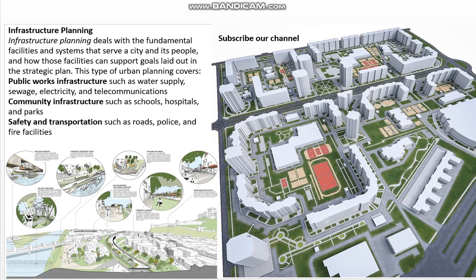Infrastructure planning deals with the fundamental facilities and systems that serve a city and its people, and how those facilities can support goals laid out in the strategic plan. This type of urban planning covers public works infrastructure such as water supply, sewage, electricity, and telecommunications; community infrastructure such as schools, hospitals, and parks; and safety and transportation infrastructure such as roads, police, and fire facilities.